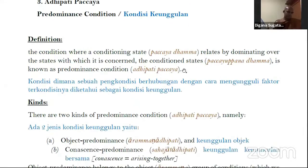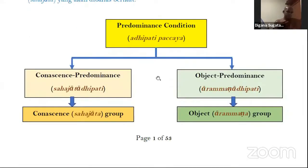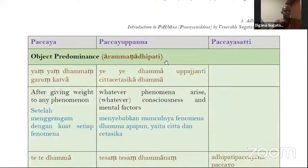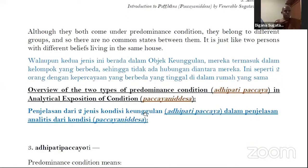Let's look at the chart. Adipati Pachaya has two meanings: Sahajata Adipati — co-nascence predominance — and Arammana Adipati — object predominance. Although they are both included in Adipati Pachaya, they belong to different groups, so there is no relationship between them. Walaupun kedua jenis ini berada dalam Adipati Pachaya, mereka termasuk dalam kelompok yang berbeda — seperti dua orang dengan kepercayaan yang berbeda yang tinggal di dalam rumah yang sama.